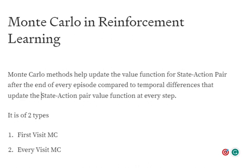Both Monte Carlo and temporal difference are used for updating the value function for a given state-action pair in a reinforcement learning environment. The value function is essentially an aggregate — like an estimated reward — that you might get for taking a particular action 'a' in state 's'.